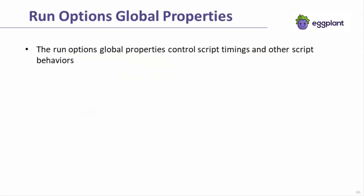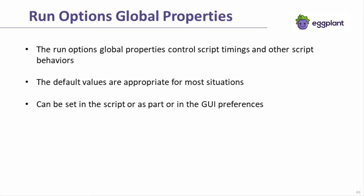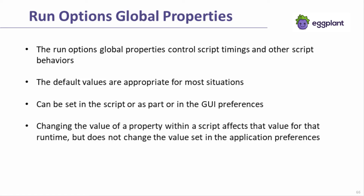The timing of various events, such as keyboard and mouse events, are controlled by a set of run option global properties. For the large majority of global properties, the default values are appropriate, but there are some run option global properties we see adjusted fairly often. The run options can be configured either in the script or in the Eggplant Functional GUI preferences. When changing the value of a run option within a script, that value will stay in effect for the rest of the script execution. However, the execution has no bearing on the value set in the application preferences.